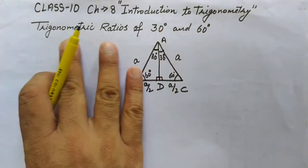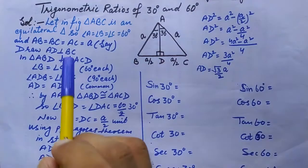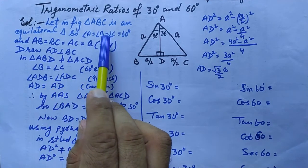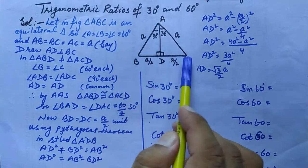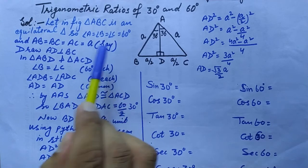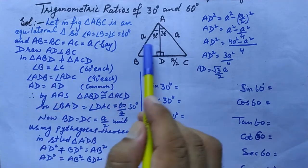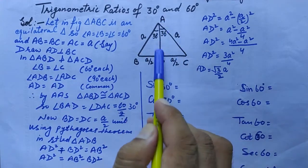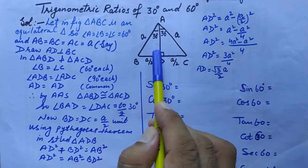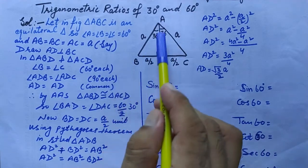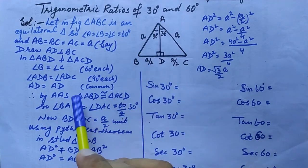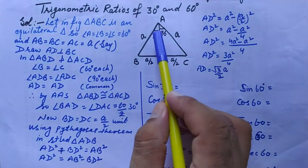Let's write the formal proof. In triangle ABC, which is equilateral, angle A = angle B = angle C = 60 degrees, and each side = a units. Draw AD perpendicular to BC. In triangles ABD and ACD: angle B = angle C = 60 degrees, angle ADB = angle ADC = 90 degrees, and AD = AD (common). By AAS, the two triangles are congruent.